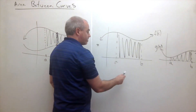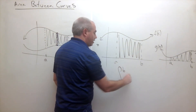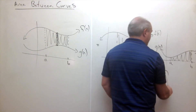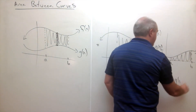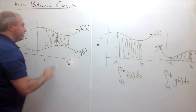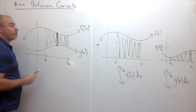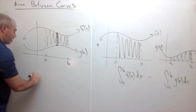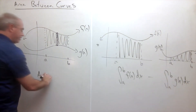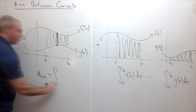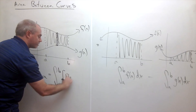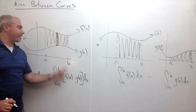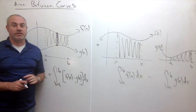The area under f of x is the integral from a to b of f of x dx, and the area under g of x is the integral from a to b of g of x dx. So the area trapped between the two curves is the integral from a to b of f of x minus g of x dx, where f of x is the top function and g of x is the bottom function.